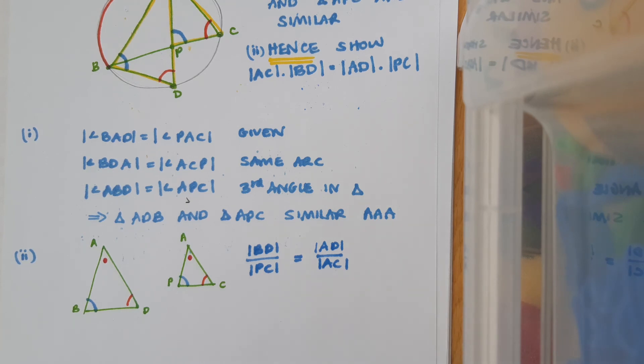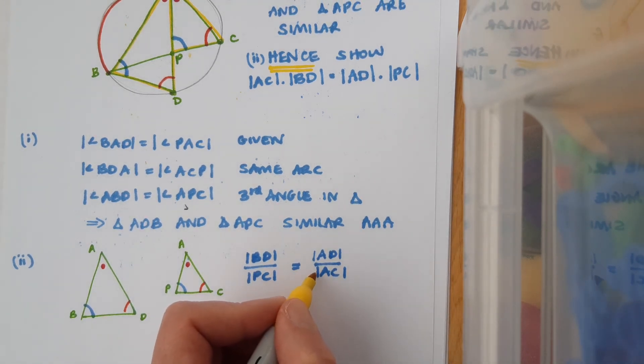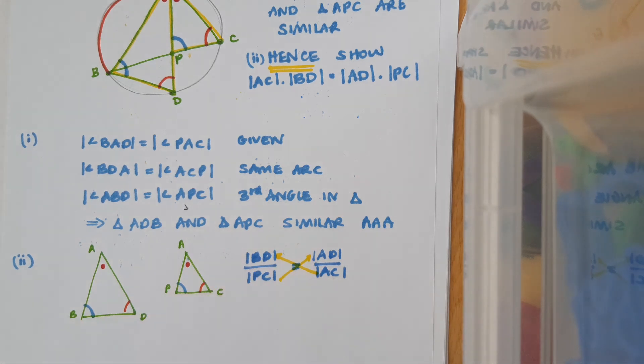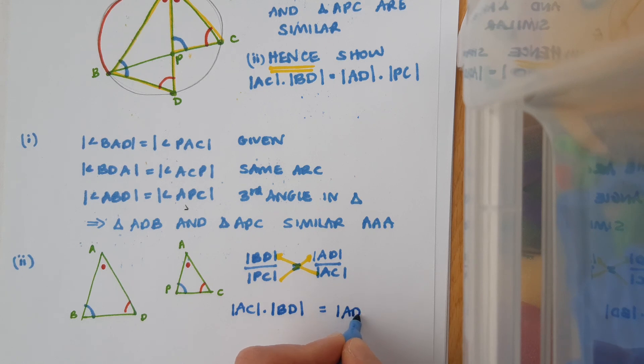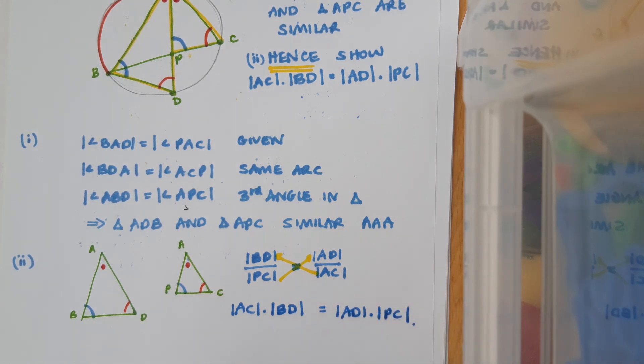So what I'm going to do is, I don't want fractions, I want multiplication. So I want to take my denominators up and multiply them by the far side. So that is going to give me the result of AC by BD equals AD by PC, which is exactly what I was trying to get.